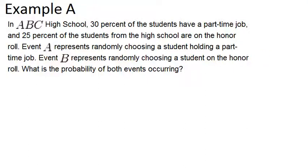In this video we will look at a few examples to practice working with independent events. In example A, it says in ABC high school 30% of the students have a part-time job and 25% of the students are on the honor roll. Event A represents randomly choosing a student holding a part-time job. Event B represents randomly choosing a student on the honor roll. What is the probability of both events occurring?